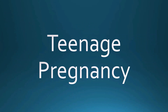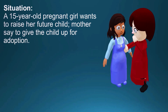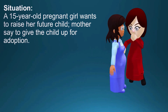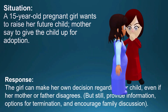Teenage pregnancy. A 15-year-old pregnant girl wants to raise her future child. The mother says no, give it up for adoption. What do we do? The girl can make her own decisions regarding her child — this is just like prenatal care. We trust the minor even if her mother or father disagrees. But still provide information and options for termination and encourage family discussion.